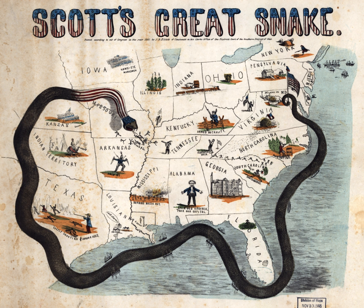Much of the war along the South Carolina coast concentrated on capturing Charleston, due both to its role as a port for blockade runners and to its symbolic role as the starting place of the war. One of the earliest battles of the war was fought at Port Royal Sound, south of Charleston. The Union Navy selected this location as a coaling station for the South Atlantic Blockading Squadron.